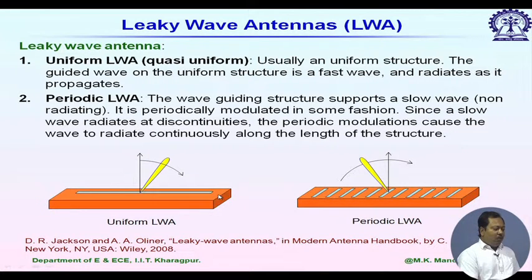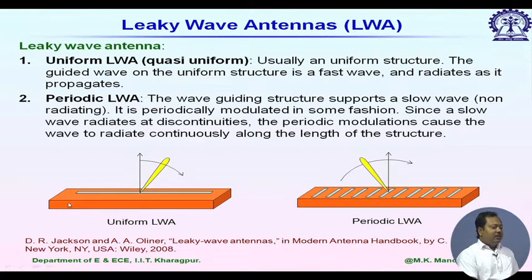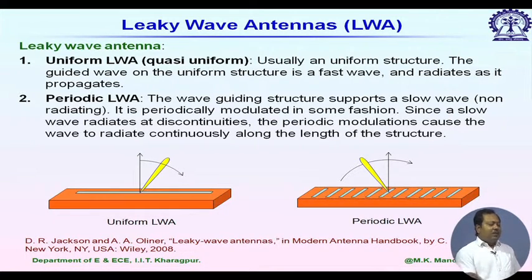An example of a uniform leaky wave antenna is a rectangular waveguide with one longitudinal slot on the top wall. It radiates along its length — leakage occurs along the length and comes out as radiation. Inside, for fundamental mode operation, the TE10 guided wave mode is used. We consider both alpha, due to leakage loss, and beta. The total alpha has two components: radiation loss and power lost inside the waveguiding structure itself.